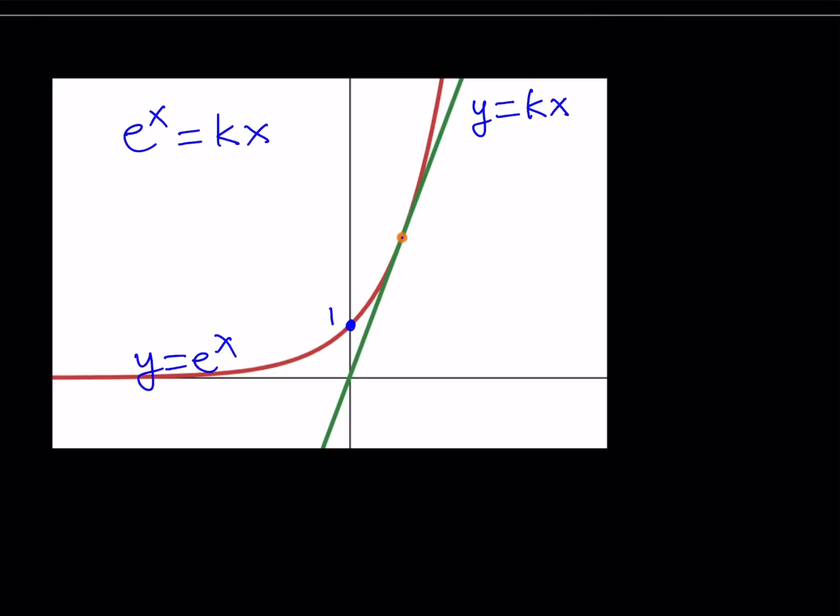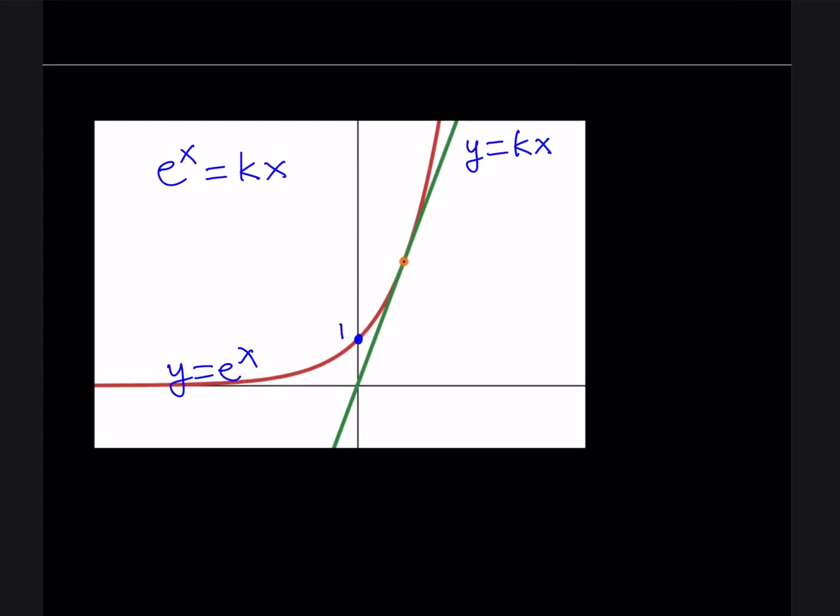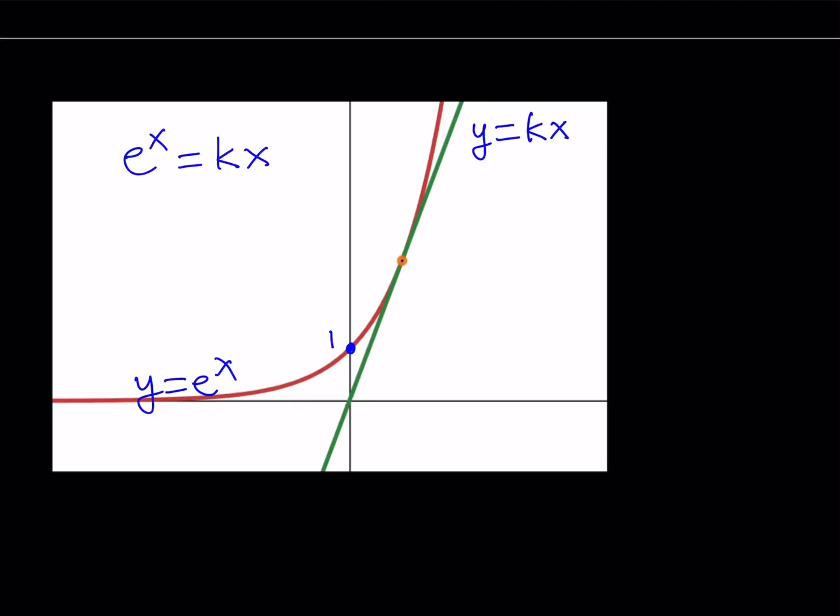In other words, the curve e to the power x is tangent to the line, or you could probably say the line is tangent to the curve. We're talking about a tangent line here. Let's go ahead and call the x-coordinate of this point a. And then the y-coordinate, obviously, is going to be something.